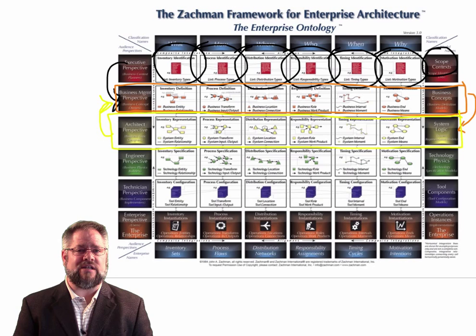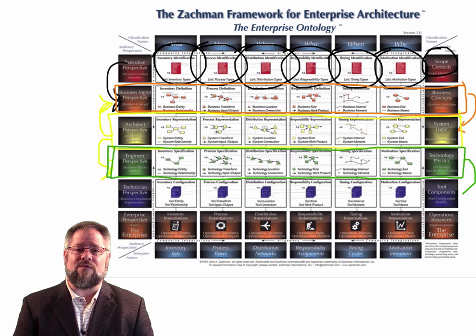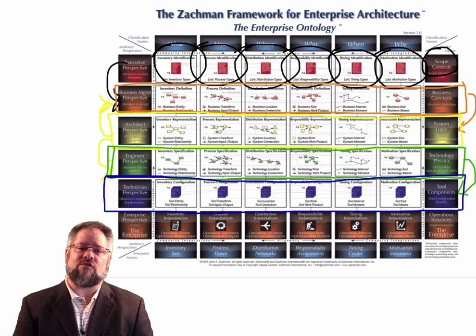The system representation is technology agnostic. This means that we have not made a decision about which technology to be applied. We're focused on ensuring we know how our system must operate in order to be consistent with the business concepts. It's in row four we make decisions about technology physics — here we decide about different technologies to be used, such as the difference between the use of a filing cabinet or a database for storing records of transactions. Each technology physics is then transformed again in row five to address specific tool configuration, looking at specifics between different vendors or coding for the technology decisions made in row four. Finally, we implement our decisions — this is row six.